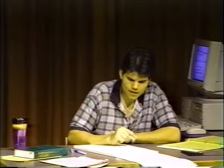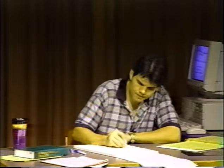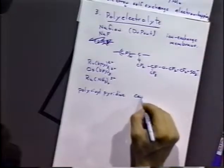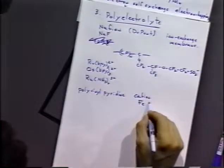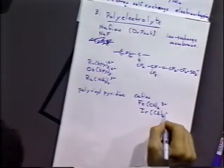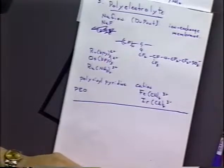Nafion is a very popular polyelectrolyte used for many things, like fuel cell membranes, to allow protons to pass through while excluding anionic components. Other materials people have used include polyvinyl alcohol and polyvinyl pyridine — the pyridine becomes protonated creating cationic sites, so it can incorporate anions like ferrocyanide or iridium hexachloride. Polyethylene oxide (PEO) is another popular one with nice properties.